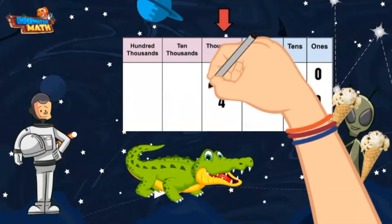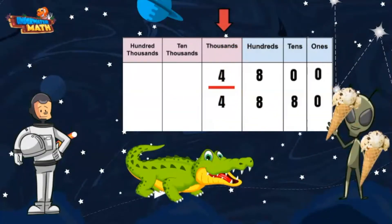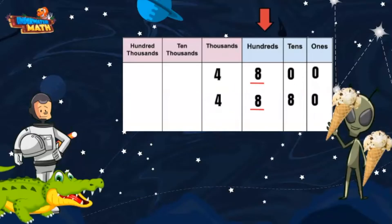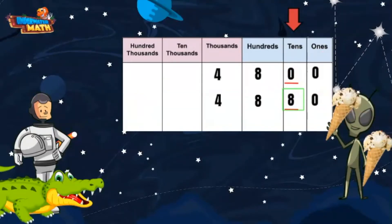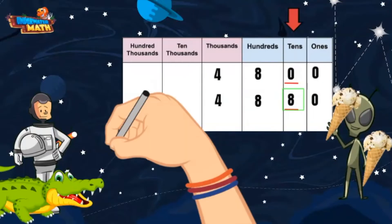These numbers both have a digit in the thousands place of 4. They aren't any different yet. Let's move over to the next place value. Here they each have an 8 in the hundreds place. As we move to the tens place, the first number has a 0 and the second number has an 8. Since 8 is greater than 0, it means this entire number is greater.